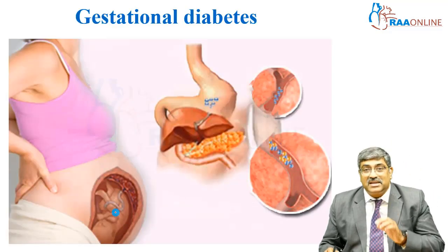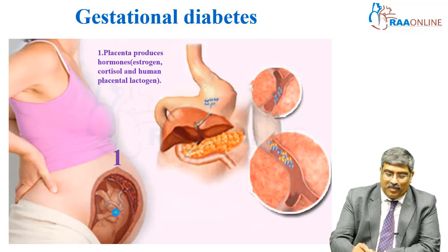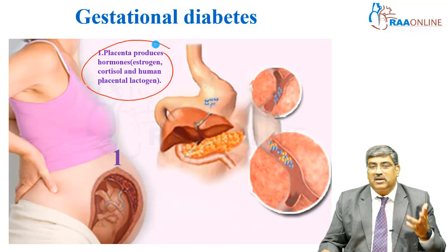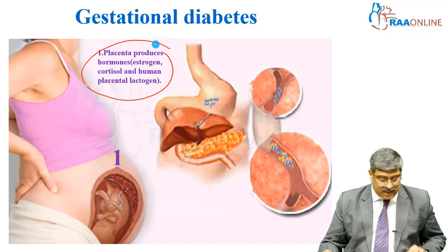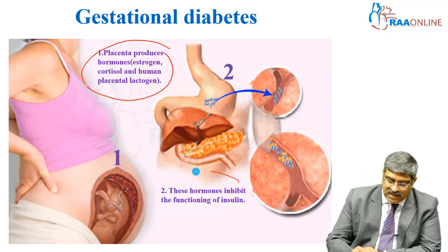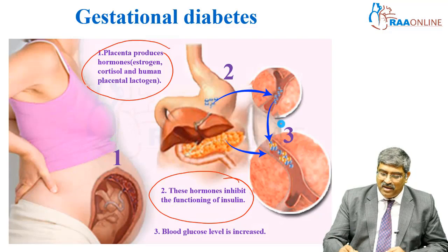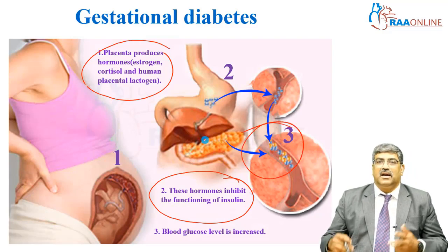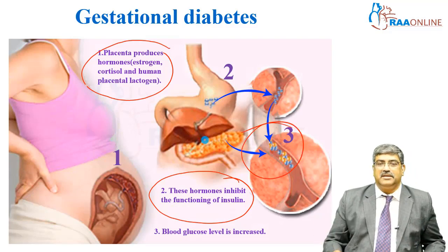Now coming to gestational diabetes, here the placenta produces hormones — estrogen, cortisol, and HPL (human placental lactogen) — which counter the action of insulin. Thereby glucose in the blood is high and you have hyperglycemia.